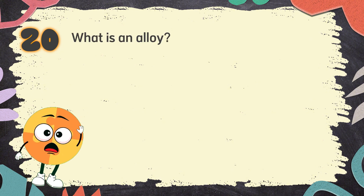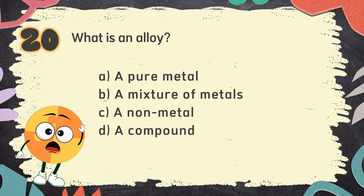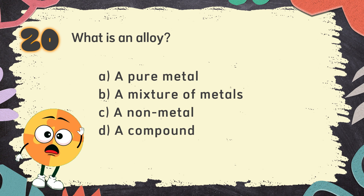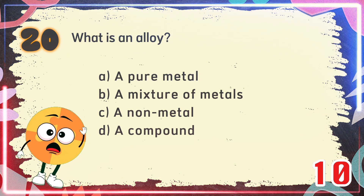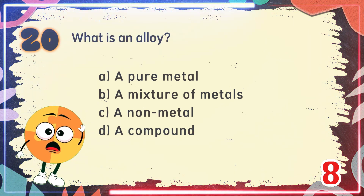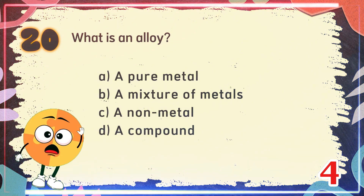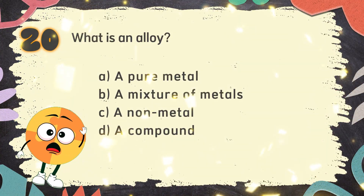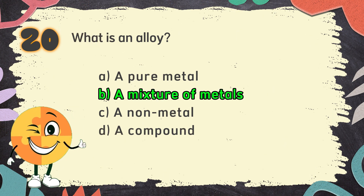Number 20. What is an alloy? The choices are: A. A pure metal. B. A mixture of metals. C. A non-metal. D. A compound. The correct answer is B: A mixture of metals.